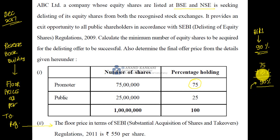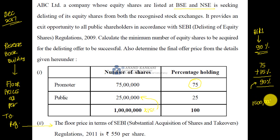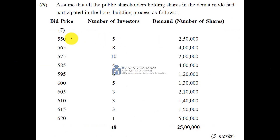Now, 15% of the total number of shares — the total is 1 crore shares — gives you 15 lakh shares. So the minimum bid required is 15 lakh shares. You will need bids totalling 15 lakh shares. The final offer price is determined by which price level achieves that cumulative bid quantity.